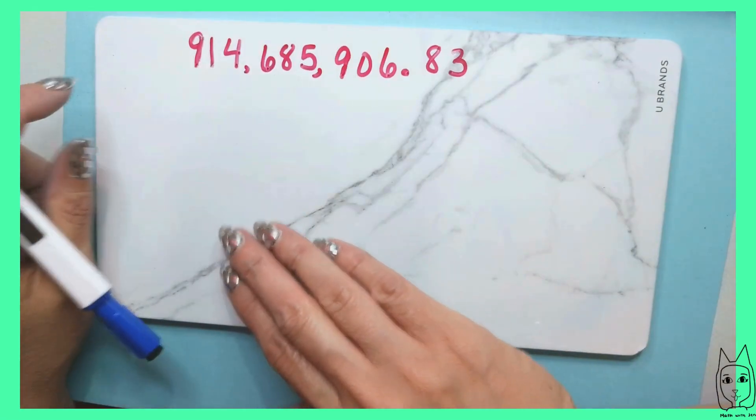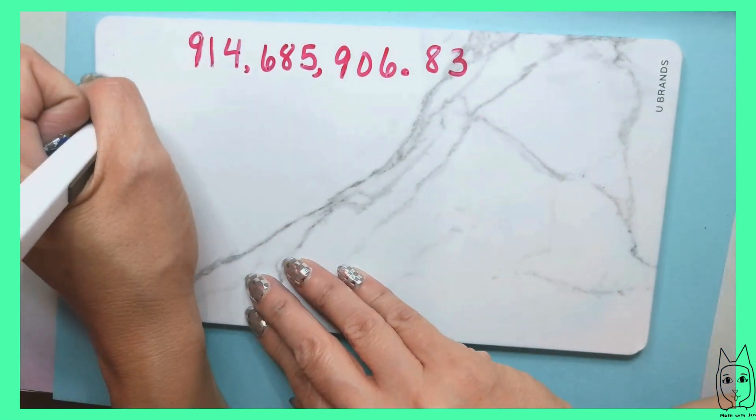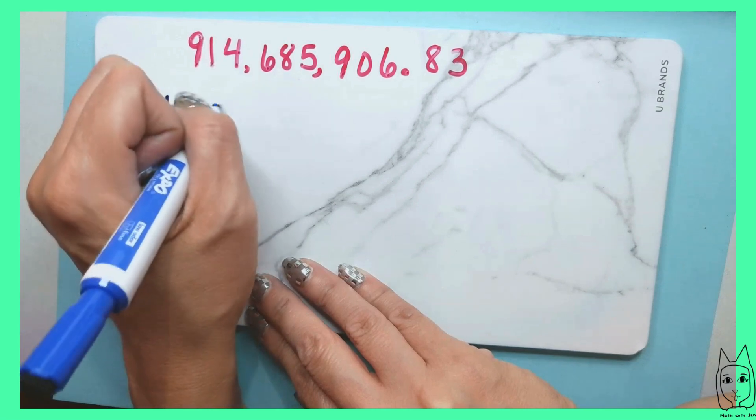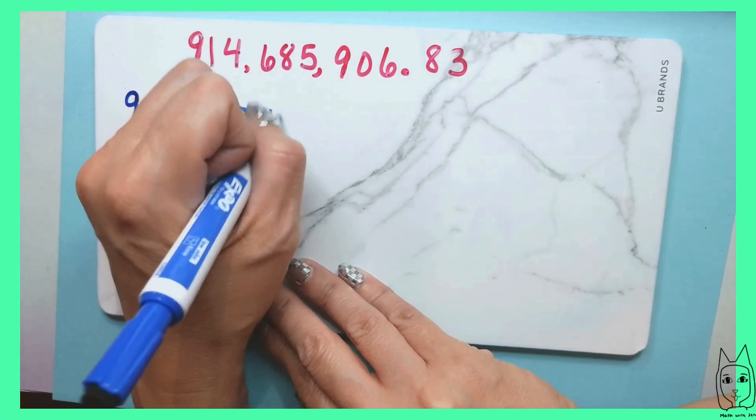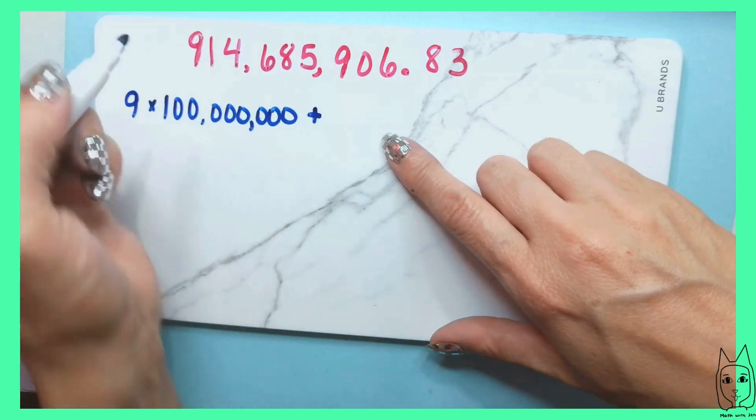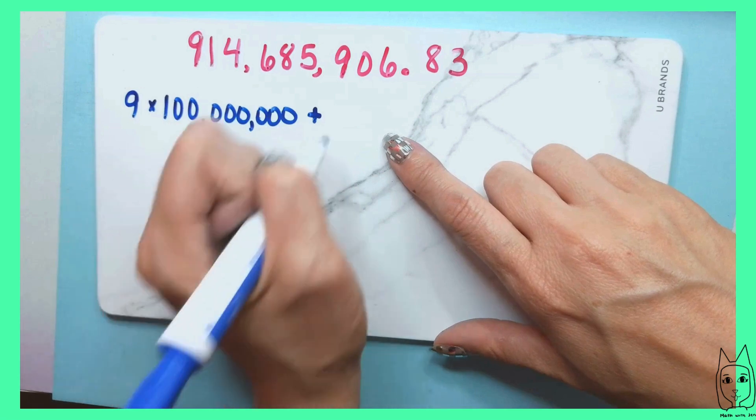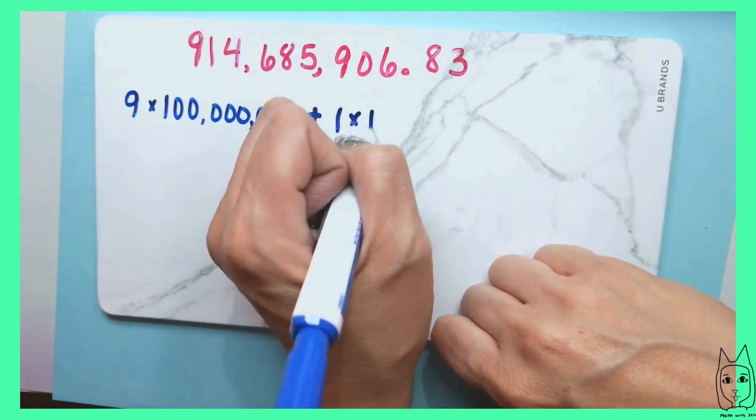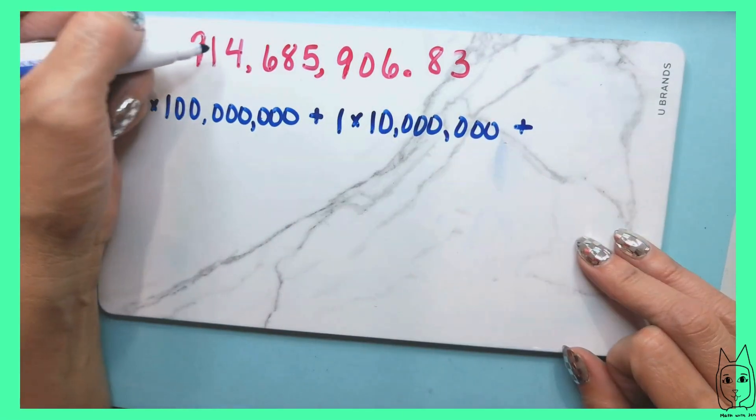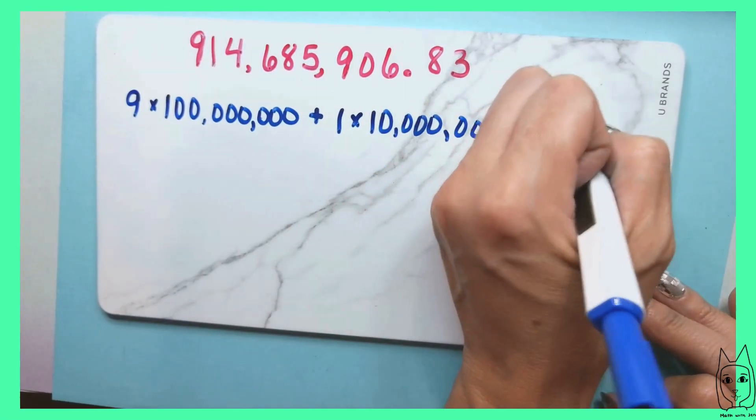We have nine hundred million, so that would be 9 times 100,000,000. Then we have, this is in the ten millions, so it would be 1 times 10,000,000. We would have four million, so 4 times 1,000,000.